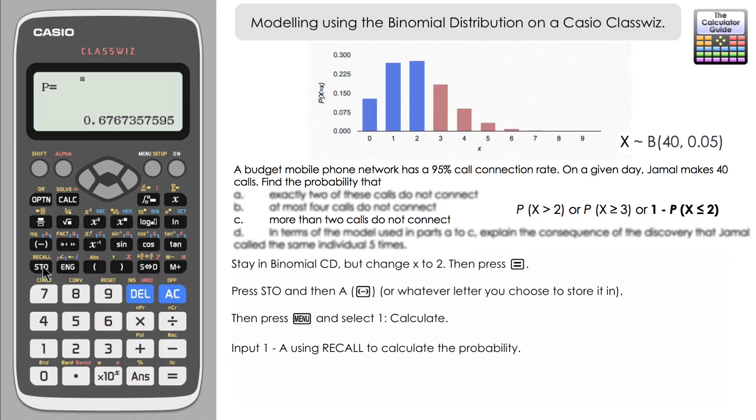And what I'm going to do is to store that into memory a so press store and then a and the ClassWiz should confirm store to a and then press menu and we want to go to calculate mode press one. And then we want to do one minus a so we want to do one minus alpha a one minus the probability we just found to find out the probability that more than two calls do not connect. And here we have our probability 0.3233 to four decimal places and so on.